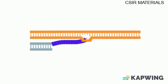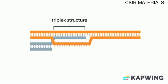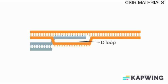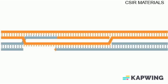One of the strands of the uncut DNA is displaced and forms a structure called a D-loop, or displacement loop. The invading strand is extended by new DNA synthesis, enlarging the D-loop.